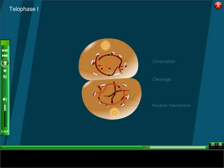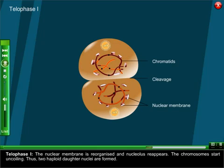Telophase one: The nuclear membrane is reorganized and nucleolus reappears. The chromosomes start uncoiling. Thus two haploid daughter nuclei are formed.